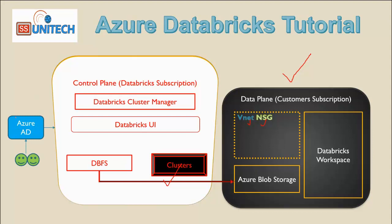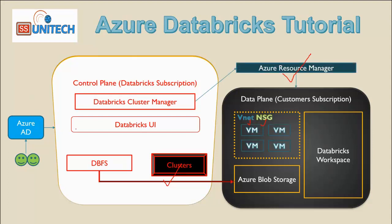Next, we log in using Azure Active Directory, and once we are successfully logged in, we provide some tasks. Those tasks go into the Databricks cluster manager, and the cluster manager goes to the Azure Resource Manager, which takes care of distributing the task. It goes into the VNet where it creates virtual machines based on the nodes of the cluster, and the task is distributed among all those virtual machines. Once complete, the response returns to the Azure Resource Manager, then to the cluster manager, and back to the user.